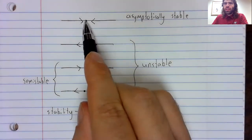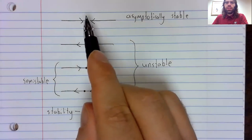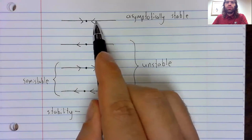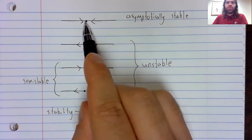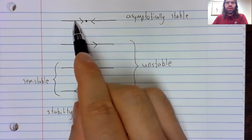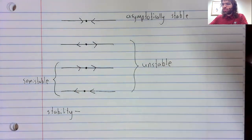An asymptotically stable fixed point has the property that if you leave the fixed point, you then come back to it. You get knocked off the fixed point and you follow the arrow back to it.